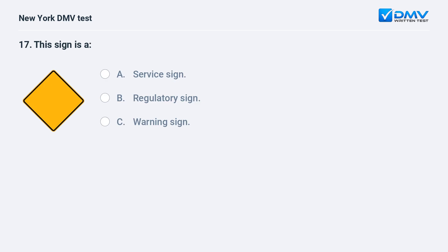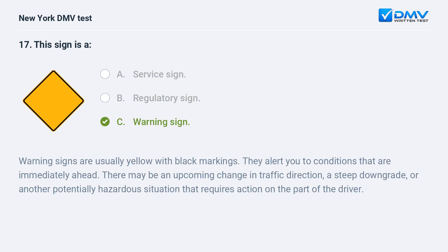This sign is a: A. Service sign. B. Regulatory sign. C. Warning sign. The answer is C: Warning sign. Warning signs are usually yellow with black markings. They alert you to conditions that are immediately ahead, such as an upcoming change in traffic direction, a steep downgrade, or another potentially hazardous situation that requires action on the part of the driver.